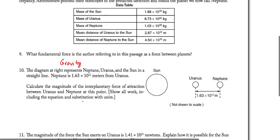Next, it says based on the diagram at the right, showing Neptune, Uranus, and the Sun in a straight line, Neptune is 1.63 times 10 to the 12 meters from Uranus. Calculate the magnitude of the interplanetary force of attraction between Uranus and Neptune at that point, showing all work. Well, that's just Newton's law of universal gravitation. The force of gravity is going to be G M1 M2 over R squared. G is 6.67 times 10 to the minus 11 newton meters squared per kilogram squared.